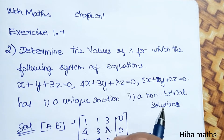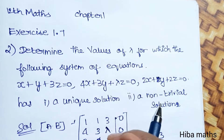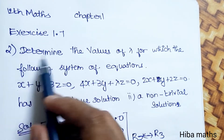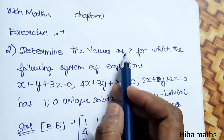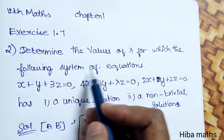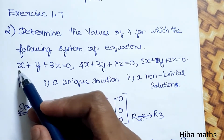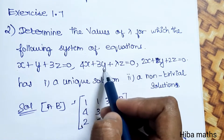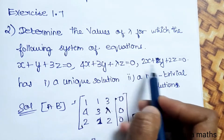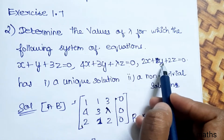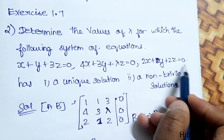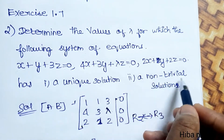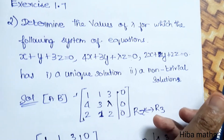Hello students, welcome to Heba Maxx 12, Standard Maxx chapter 1 exercise 1.7, the second question: determine the values of lambda for which the following system of equations — x plus y plus 3z equal to 0, 4x plus 3y plus lambda z equal to 0, 2x plus y plus 2z equal to 0 — has a unique solution or a non-trivial solution.